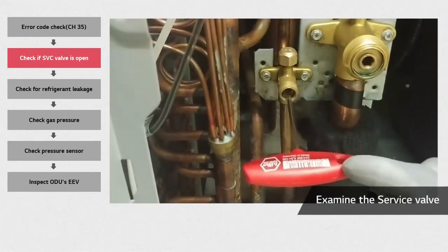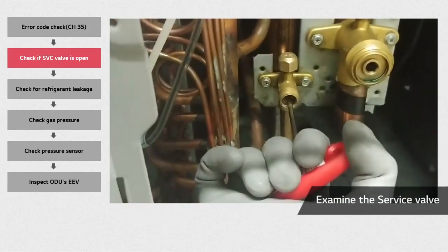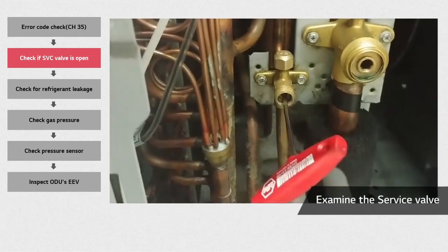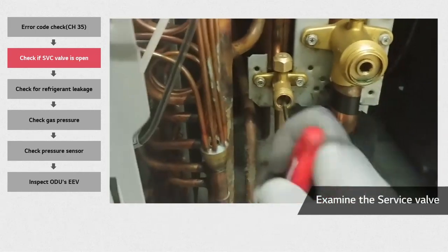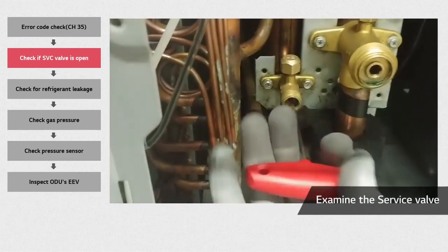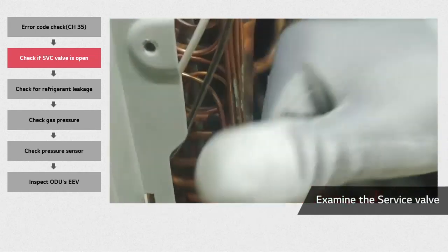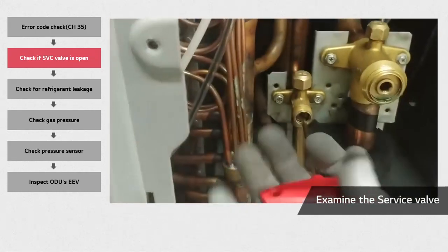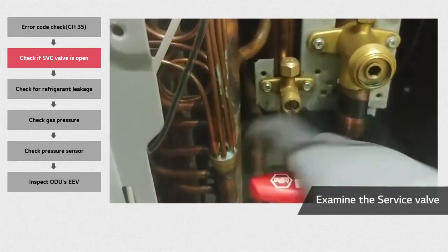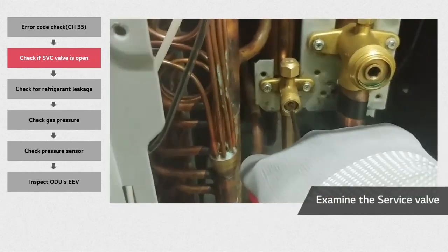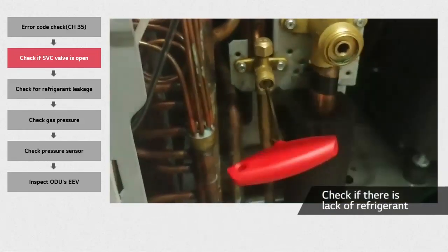Rotating the valve top clockwise will close the valve, and counterclockwise will open it. You can use a right-hand rule to confirm the direction of the top ring. Once the valve has some resistance, stop applying force. These valves are fragile and break easily.